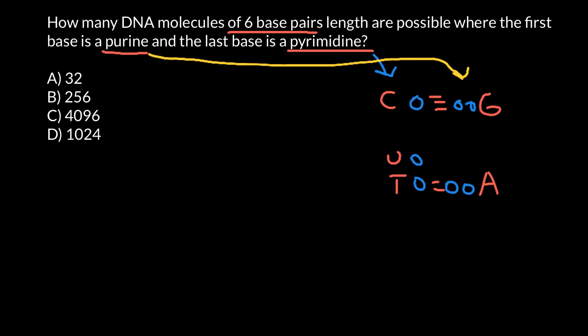We are told that our molecule has six base pairs. So let's designate each position as an empty box. First position, second, third, fourth, fifth, and sixth position.